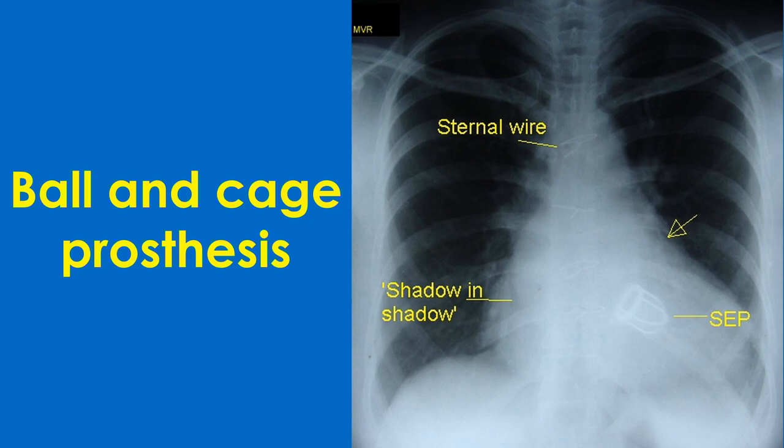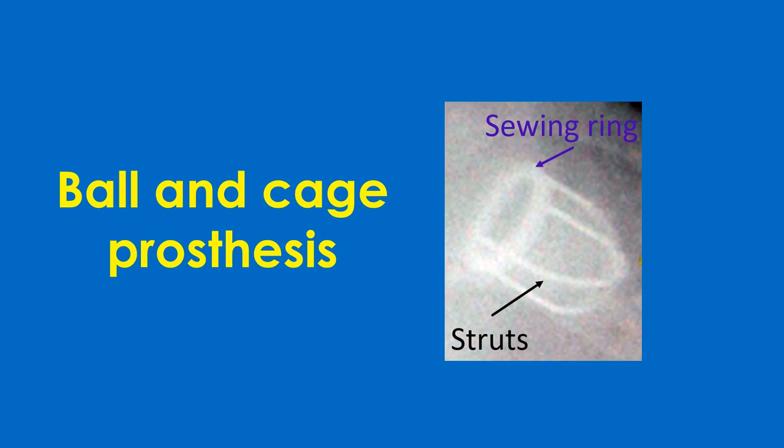The older valves were of ball-and-cage design. The prototype was the Starr-Edwards valve, which was the workhorse with valves functioning well in a person over five decades. However, due to other problems, the valve has been discontinued. The design consists of a cage with a sewing ring and struts. The mitral valve had 4 struts while the aortic had 3 struts. A ball-shaped poppet moved back and forth during the cardiac cycle to open and close the valve.